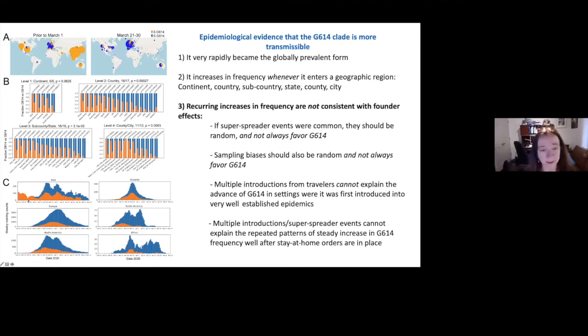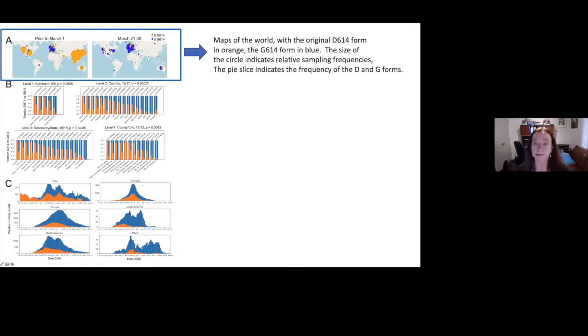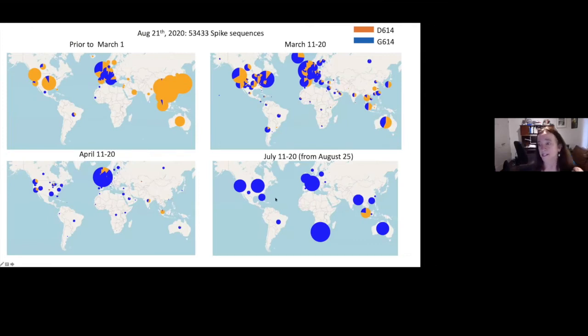Here you can see, in Asia, for example, you have the original form starting out, and then the original form is still dominant, but somewhere you start getting the shift, and then finally, the later samples are all the new form. So there's maps of the world. This was what it was like prior to March 1st, middle of March, middle of April, and currently. This is Singapore.